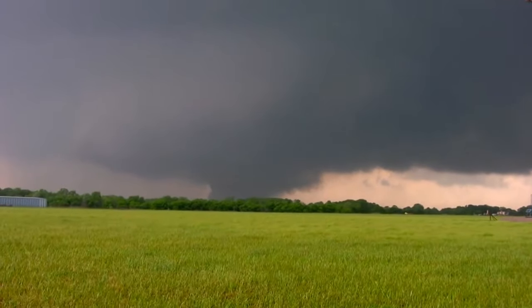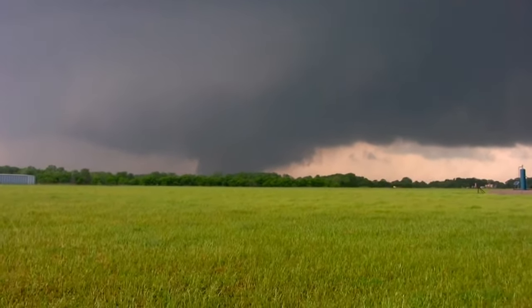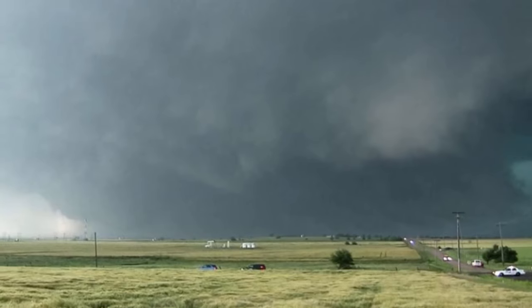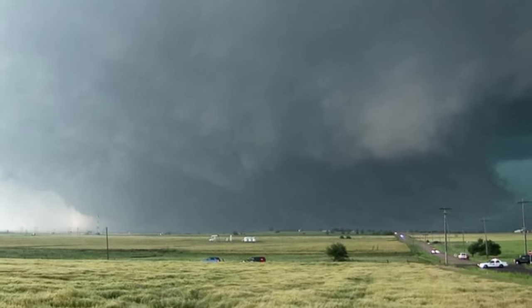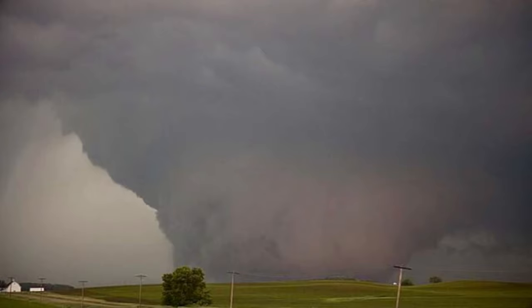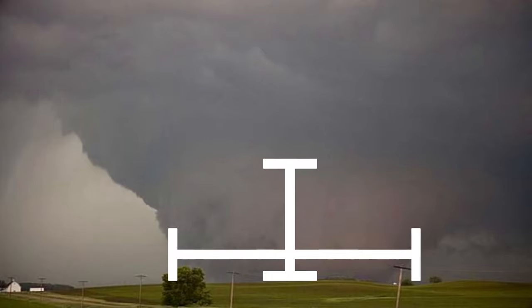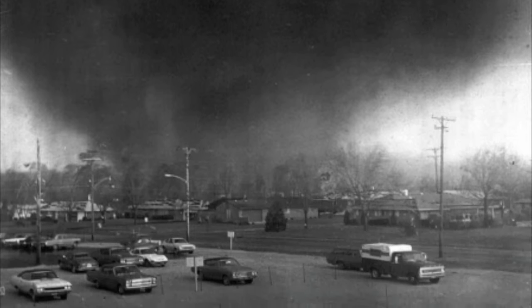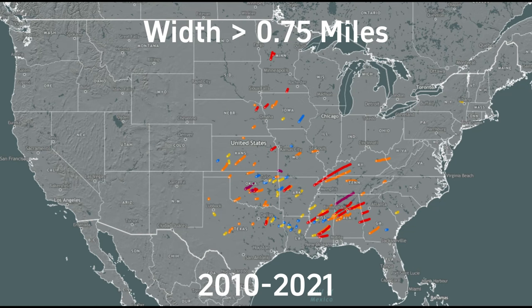Wedge tornadoes are often very violent tornadoes and can have paths of over 2.5 miles wide and winds of over 300 mph. They are called wedges because they have a wedge shape, being wider than they are tall. Tornadoes like Joplin, Moore, Greensburg, and Xenia were wedges. Wedges are fairly rare, only happening a dozen times during tornado season on average.